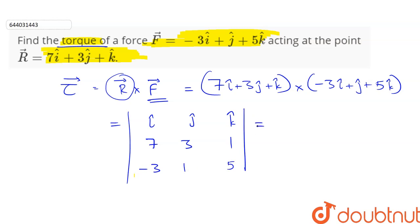Taking determinant we have i cap (15 minus 1) minus j cap (35 plus 3) plus k cap (7 plus 9).